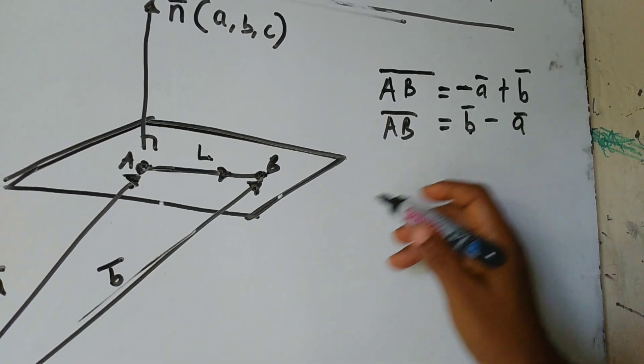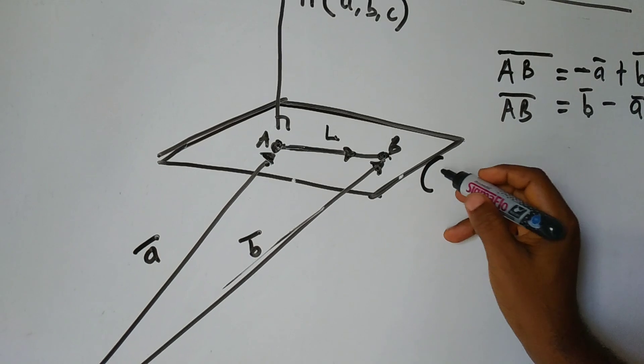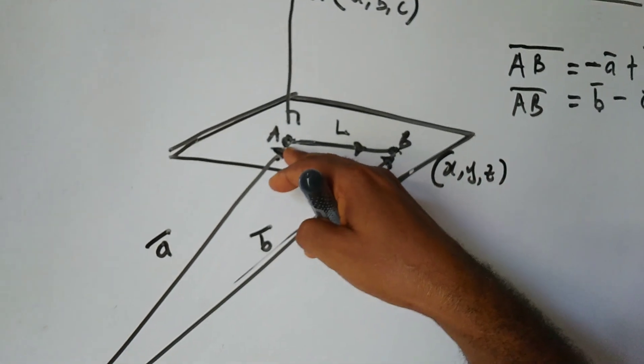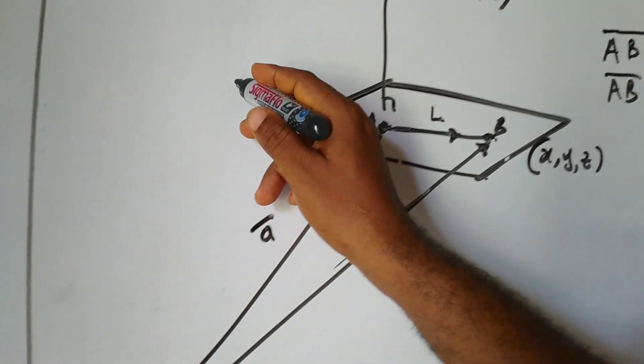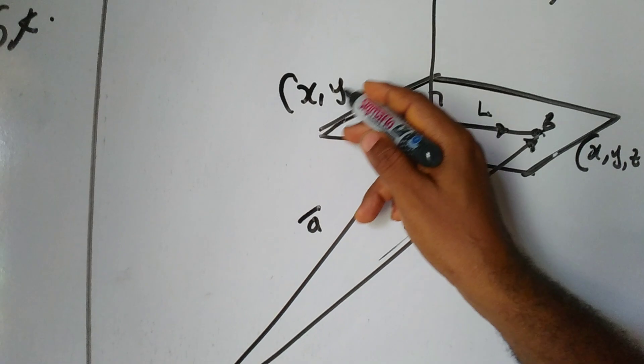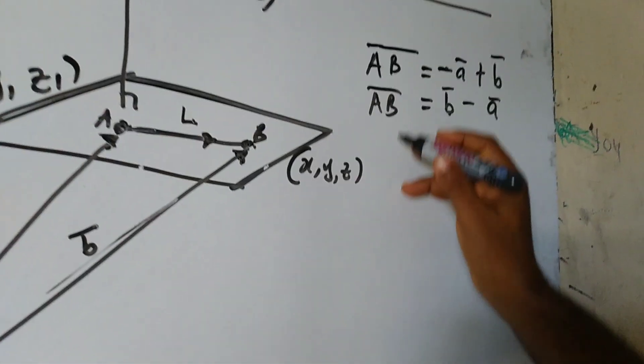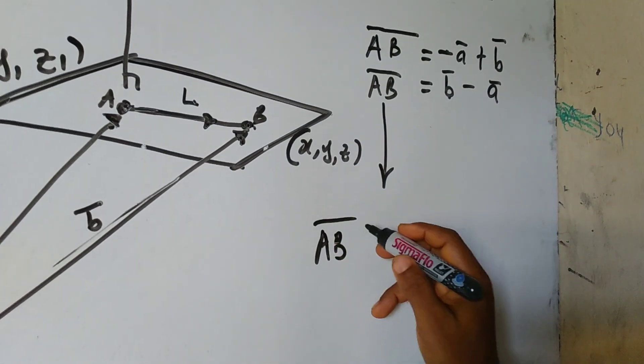Now, this particular vector B, let me say I represent it with arbitrary coordinates X, Y, and Z. And then, let's say the vector A, the coordinates are known. And the coordinates are taken as X1, Y1, and then Z1. Now, I can have an expression for this vector AB here.